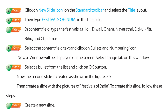A window will be displayed on the screen. Select the Image tab on this window. Step 8: Select a bullet from the list and click on the OK button. Now the second slide is created as shown in figure 5.5.